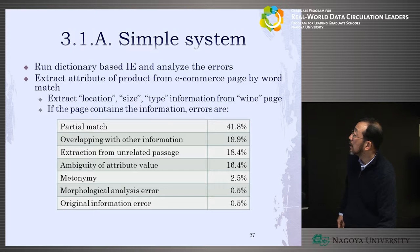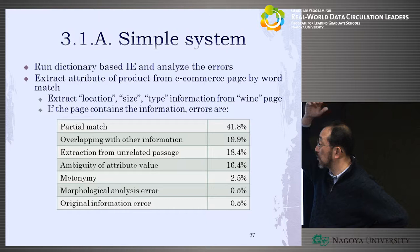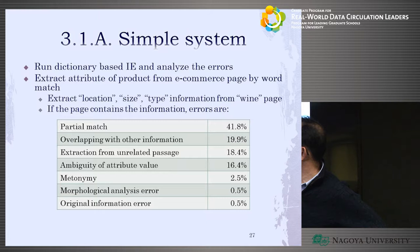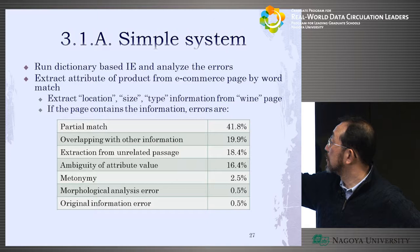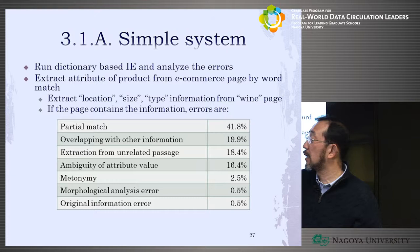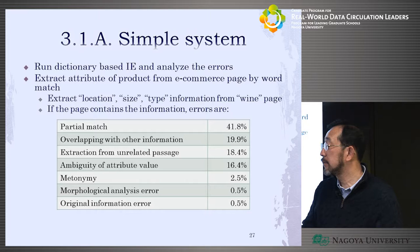Here's an example of a simple system. This example is information extraction — the task is to extract attributes of a product from an e-commerce page by word matching. For example, if you're talking about wine, they want to extract location, size, and type of grape from a sentence.